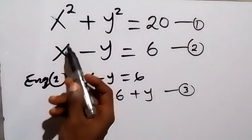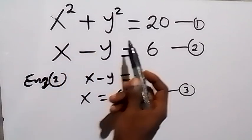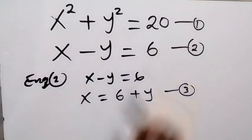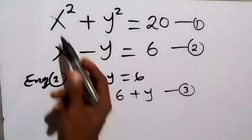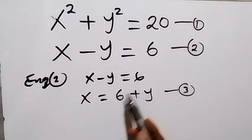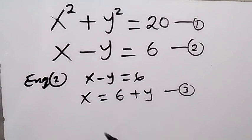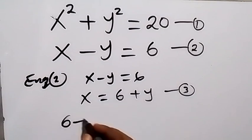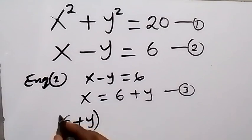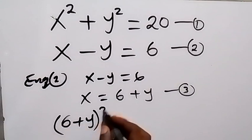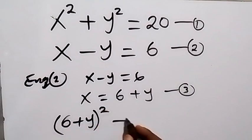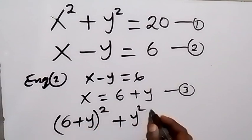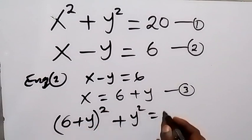From equation 1 we have x squared plus y squared equals 20. Instead of x, we substitute equation 3, so we have (6 plus y) squared plus y squared equals 20.